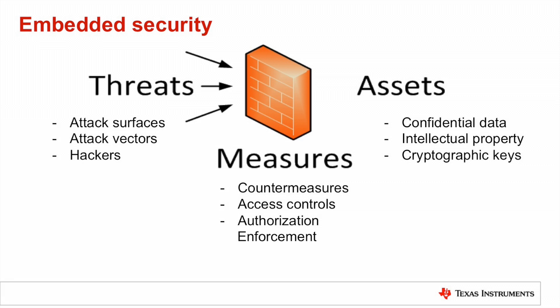To begin, we need to establish what we mean when we say security in the context of an embedded system. Security at the most basic level is about protecting assets against a given set of threats. Assets might include confidential data, on-chip resources, or intellectual property. For example, a proprietary algorithm within the customer code that executes on the device would likely be considered a valuable piece of intellectual property and would therefore be a good candidate for a secured asset.